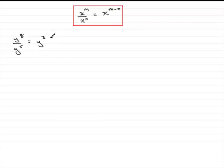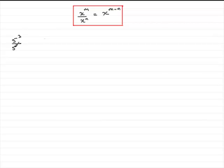What I want to do in this tutorial is extend this idea to negative powers. To do that, we'll start with 5 cubed divided by 5 to the power 4. According to the rule, we would get 5 — that's our base — to the power 3 take away 4, which is 5 to the power minus 1.